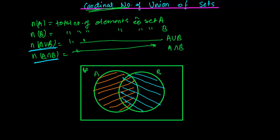The cardinal number of A intersection B is represented by the region that is double-shaded — first shaded by the gray color and then shaded by the blue color. Only this overlapping region is the cardinal number of A intersection B. Now we need to learn a formula based on this.